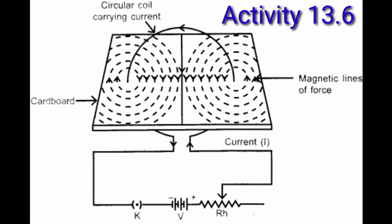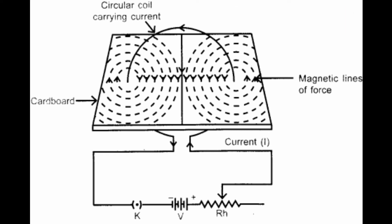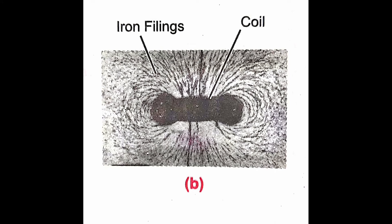For the activity, take a rectangular cardboard having two holes and insert a circular coil with a large number of turns through them, normal to the plane of the cardboard. Connect the ends of the coil in series with a battery, a key, and a rheostat. Sprinkle iron filings uniformly on the cardboard, plug the key, and tap the cardboard gently a few times. Note the pattern of iron filings that emerges — they arrange in a pattern representing the magnetic field lines due to the circular loop.